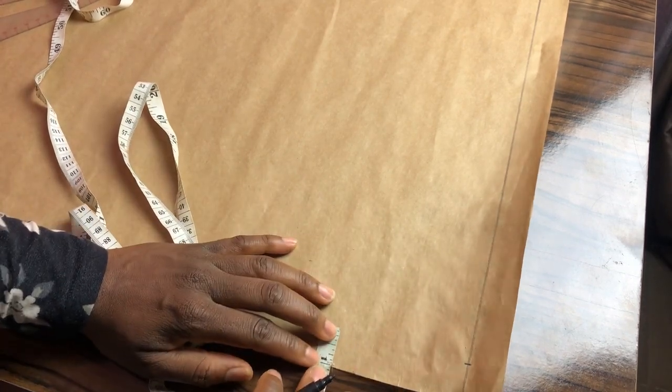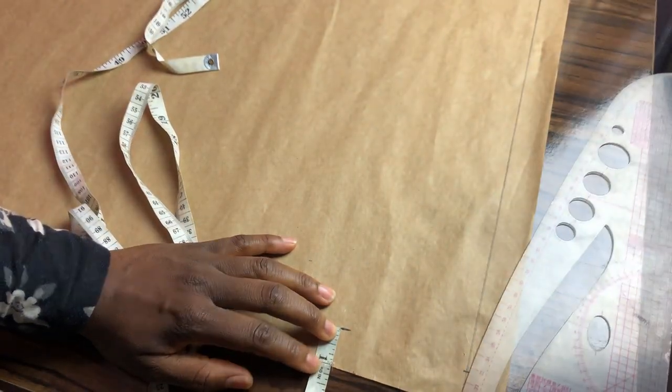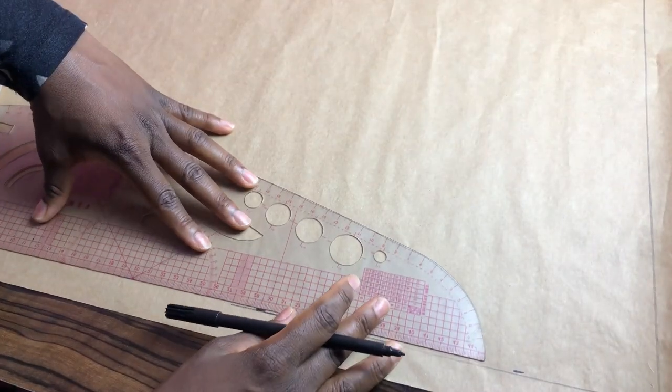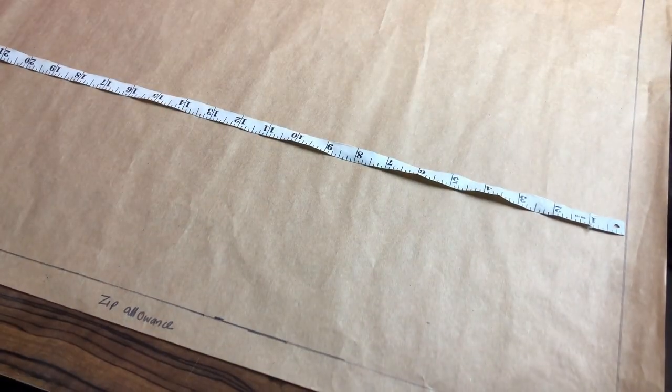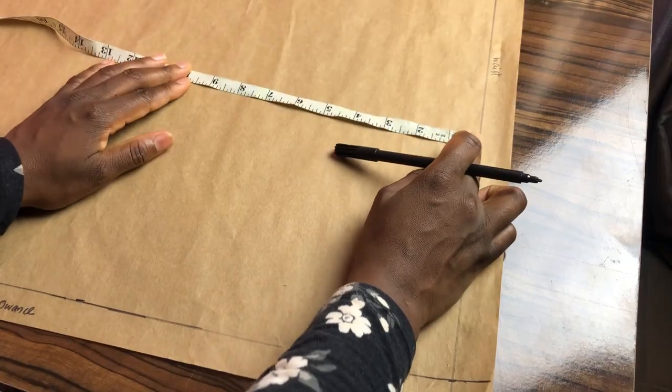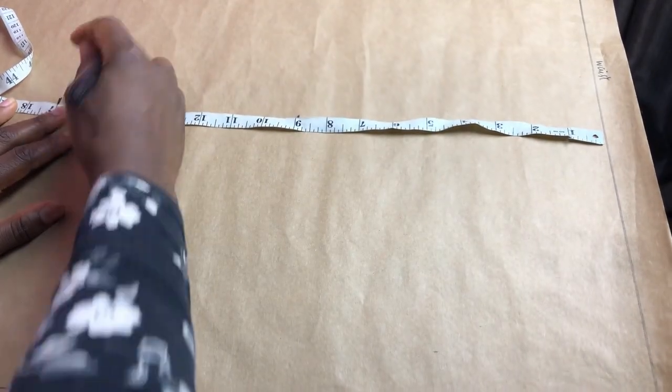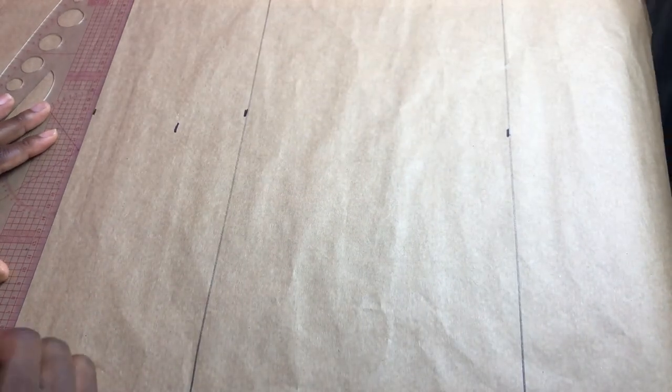First of all, mark your zip allowance along the edge of the paper. I usually use one inch, so mark that all the way and rule down. Then mark the length of the skirt. I marked my waist to mid length for this one and also rule across. Next mark your waist to hip, then waist to breaking point which is 17 inches, and then mark your waist to knee.